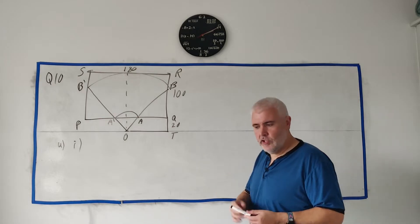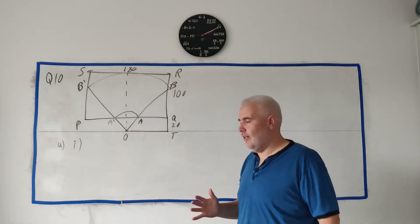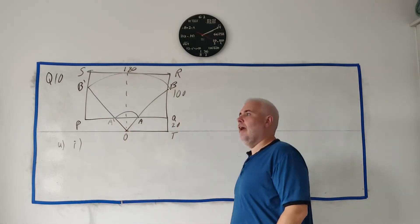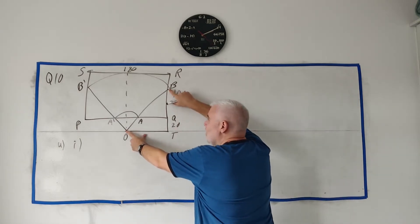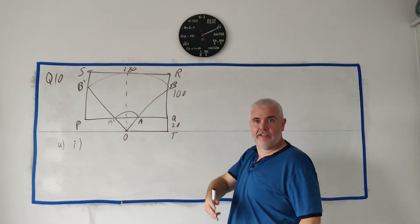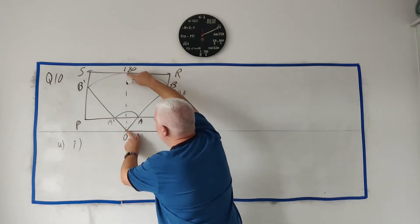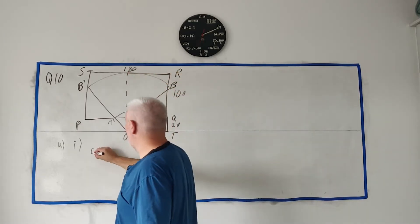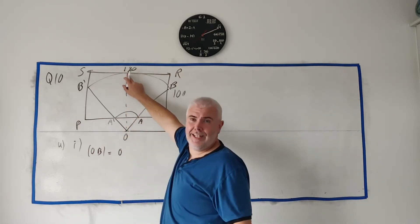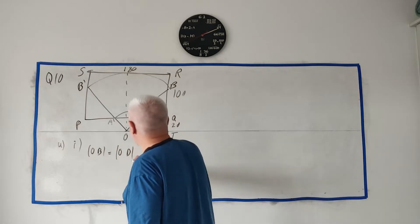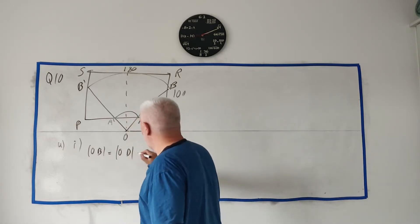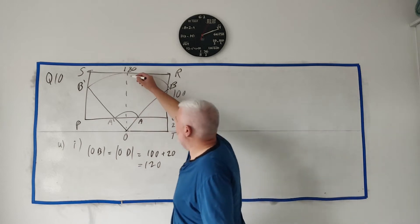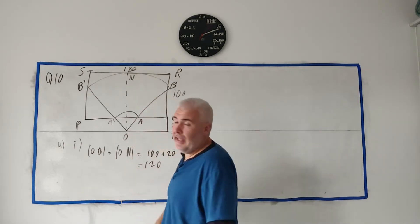The trick to this question is to look for a circle and identify all the radii — they're all equal. So OB equals OD, and OD equals 100 + 20 = 120. That's the radius of the larger circle, which is the length OB we needed to show.